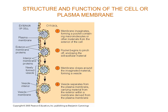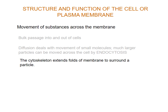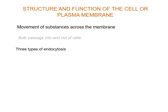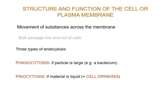This is a very useful diagram which you should remember when revising — use the labels one to four. The cytoskeleton extends folds of the membrane to surround the particles in the process of endocytosis, and the particle is then brought into the cell in a membrane-bound vesicle — it has to be membrane-bound because the inside of the cell is still aqueous. There are three types of endocytosis: phagocytosis, if there is a very large particle like a bacterium; pinocytosis, if the material is liquid, also known as cell drinking; and receptor-mediated endocytosis.